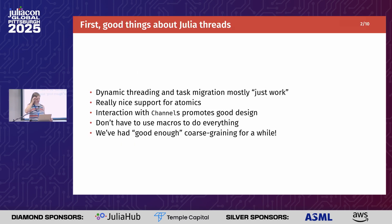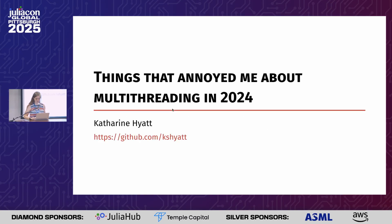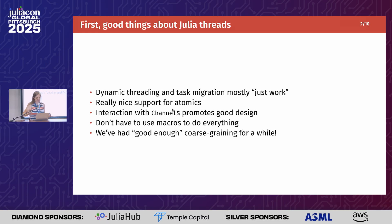First, I just want to start off talking about all the things that are really good about Julia threads. We have a lot of really amazing features that I think are actually very easy to take for granted, especially the fact that we do have dynamic and nested threading, and it mostly just works. There's some pain points, but overall it actually mostly works very well. We have nice support for atomic operations, including for pretty arbitrary types. Working with channels helps promote good designs, and the fact that channels by default are thread safe is very protective for programmers like me, who are just kind of running around like a bull in a china shop, destroying everything.